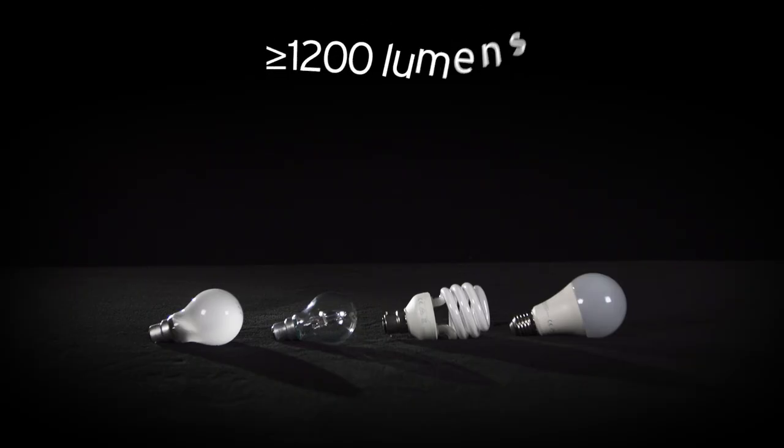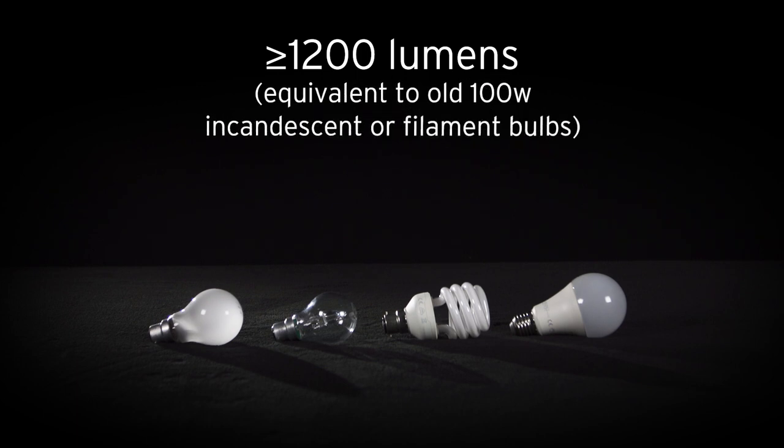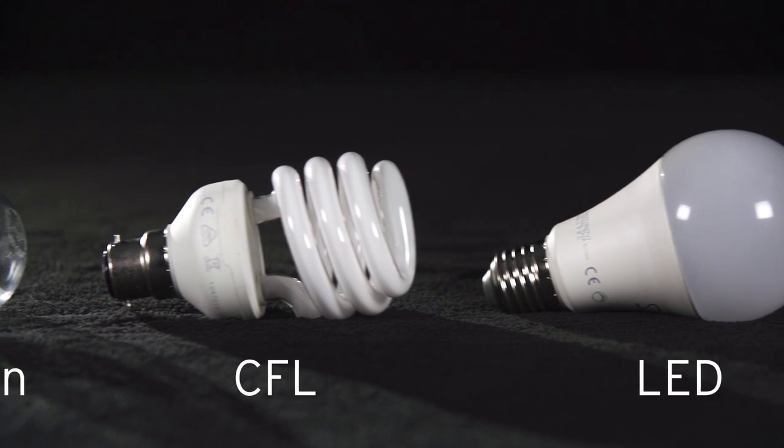Here at SAPS we recommend using light bulbs brighter than 1200 lumens, which is equivalent to a 100 watt incandescent or filament bulb, for all photosynthesis practical work. There are a wide range of light bulbs available. If you're buying new ones, lumen rating is the best thing to look at on the box to make sure that a bulb is bright enough for photosynthesis.